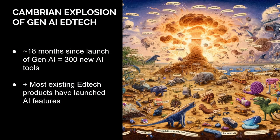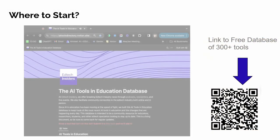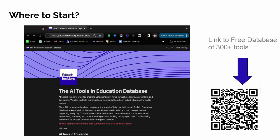Alex and I are here because of the Cambrian explosion of generative AI in education. In 18 months, over 300 new tools — thousands if you count GPTs. Most existing edtech products have launched AI features. We've had a revolution unlike any we've ever seen. So where do you start? You start with our database of 300 and counting tools.